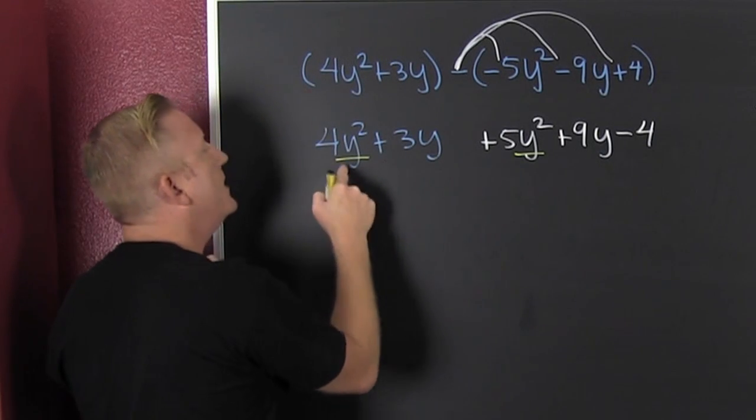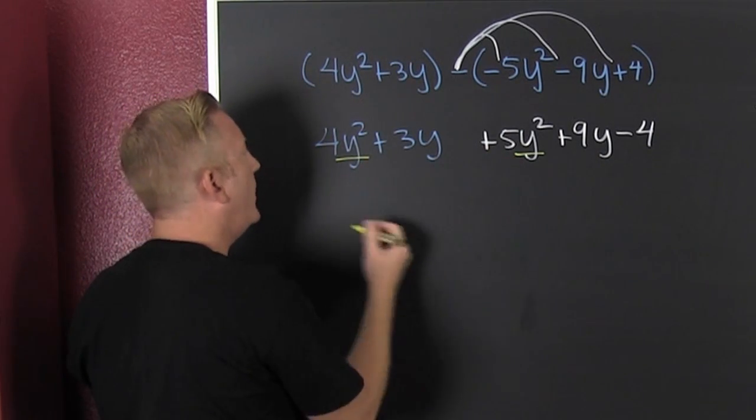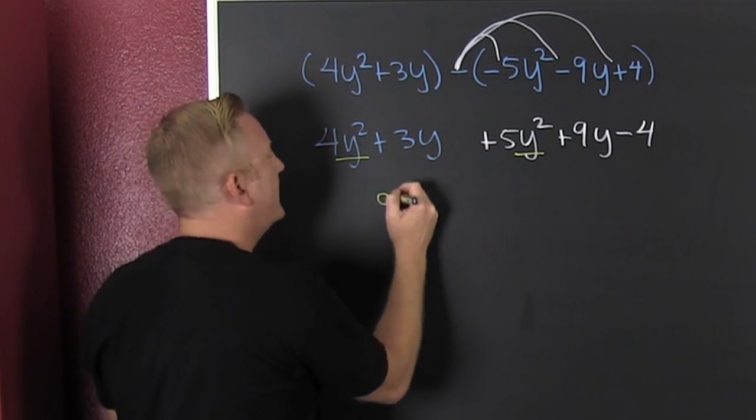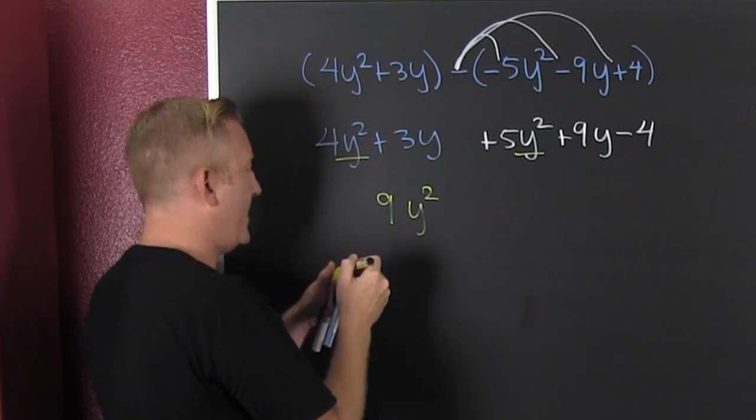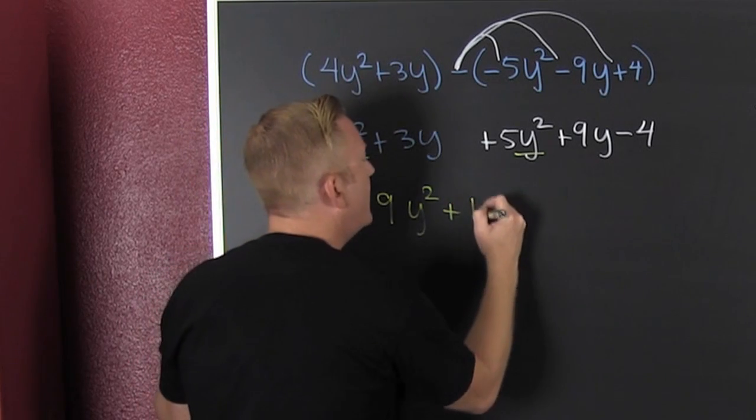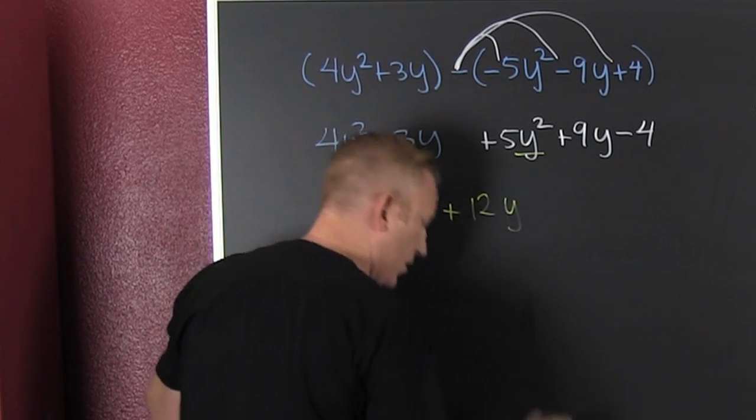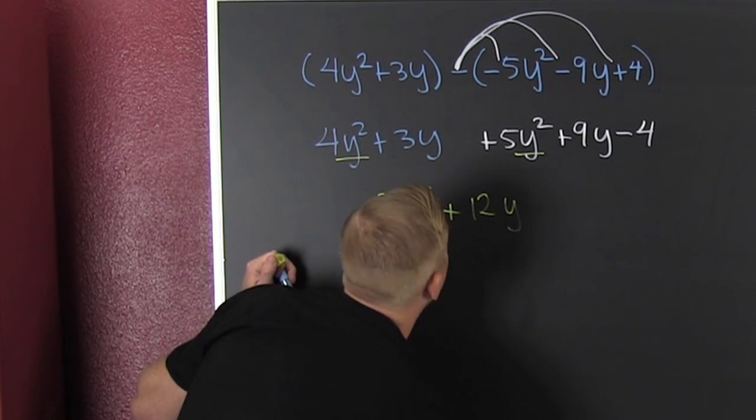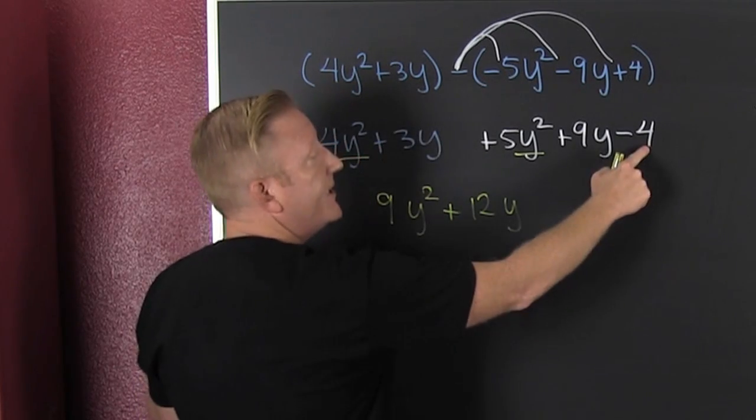Here I have y² and y², so 4 and 5 make 9y². And then my 3y and my 9y, that's gonna make 12y. And then nothing gets added to that, don't touch it, leave it alone.